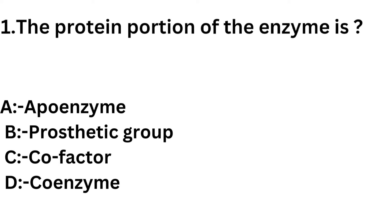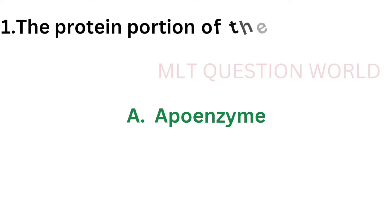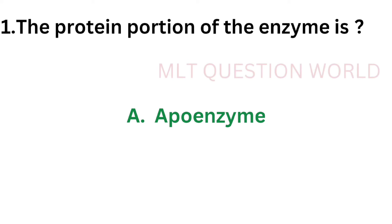Question number 1: The protein portion of the enzyme is — option A: Apoenzyme, option B: Prosthetic group, option C: Cofactor, option D: Coenzyme. The correct answer is option A, Apoenzyme. The protein portion of the enzyme is called Apoenzyme.